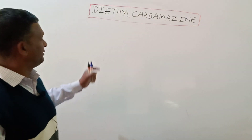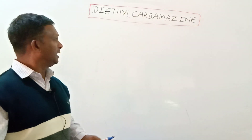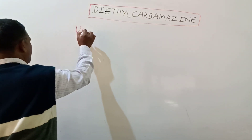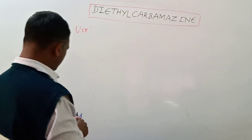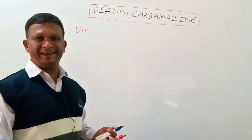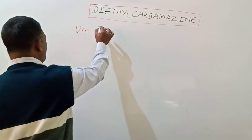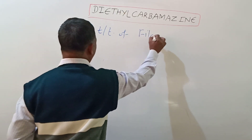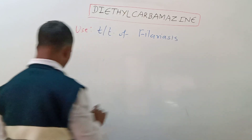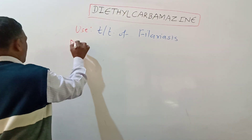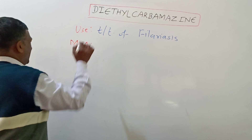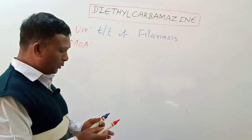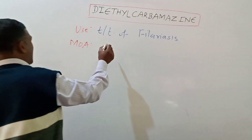Hello dear students, our today's topic is diethyl carbamazine. This compound is used as an anti-filariasis agent, meaning this drug is used for the treatment of filariasis. For this purpose, let's look at the mechanism of action of this compound.